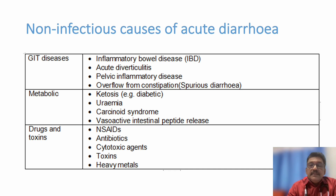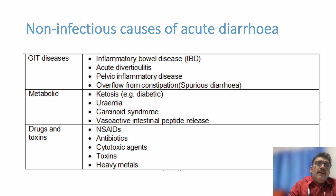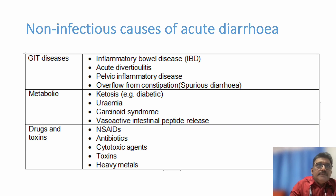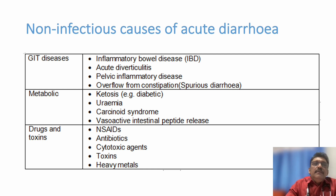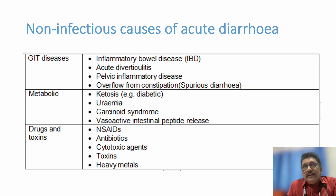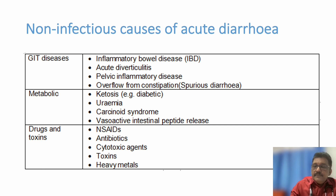Some drugs like NSAIDs can produce gastritis and diarrhea. Antibiotics — especially azithromycin and amoxicillin — can produce diarrhea. Azithromycin's mechanism is slightly different: it increases peristaltic movement and removes normal bacterial flora from the intestine. Amoxicillin and other penicillins also reduce the normal intestinal flora, which produces diarrhea.